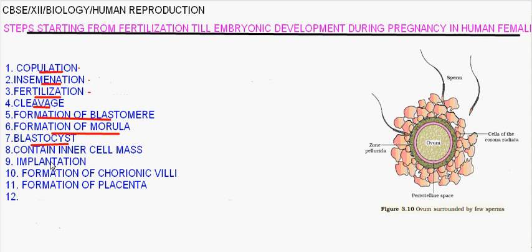Sixth step is formation of morula. Seventh step is formation of blastocysts. This blastocyst contains inner cell mass — that is the eighth step. Ninth step is implantation. Tenth step is formation of chorionic villi.